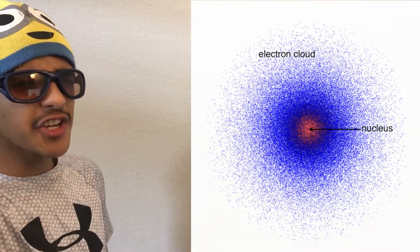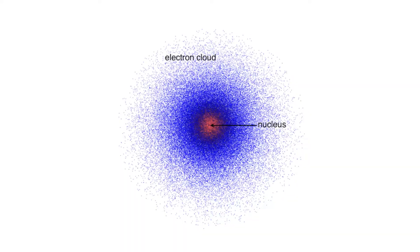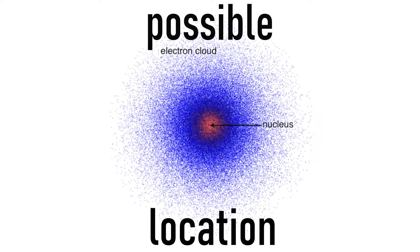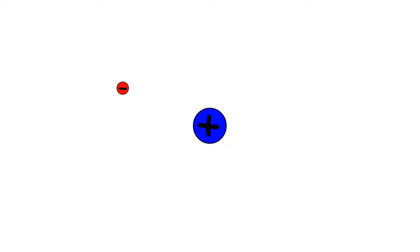Hey, why does hydrogen have so many electrons? Don't be fooled by the drawing. Each dot you see is merely a possible location for an electron in its cloud. And on top of the random location, electrons have random movement as well.